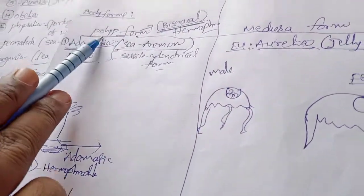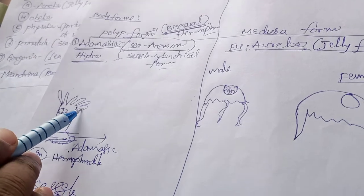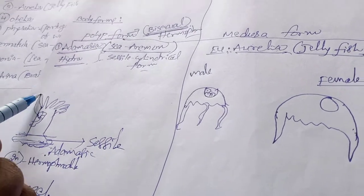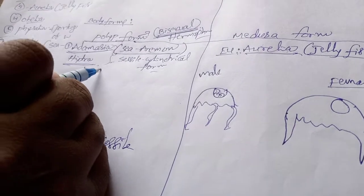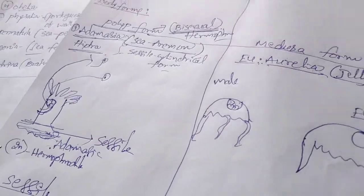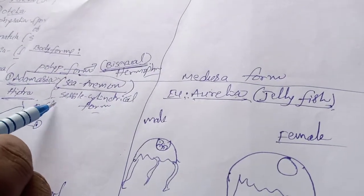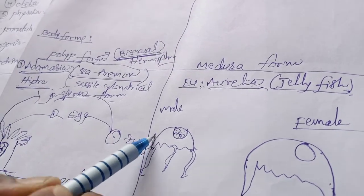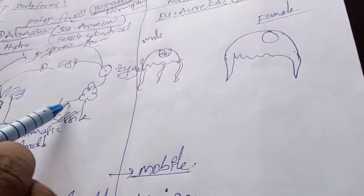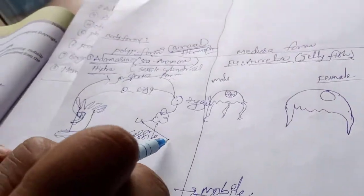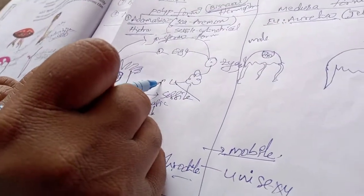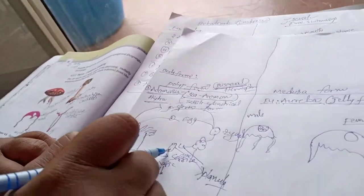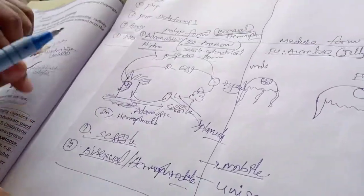In the polyp form, looking at Adamecia — these tentacles are attached in a sac-like structure. The lateral side of Adamecia produces sperm and egg. The sperm and egg fuse to form the zygote. The zygote develops into an embryo, the embryo produces a larva — this is indirect development. This larva is called the planula larva, and the planula larva develops again into Adamecia or Hydra.